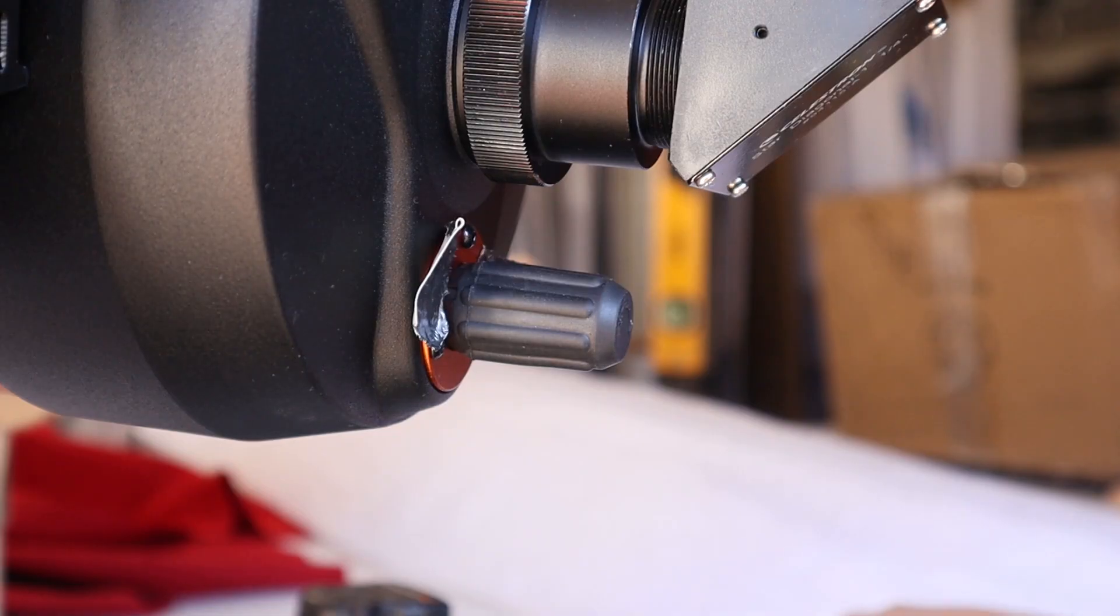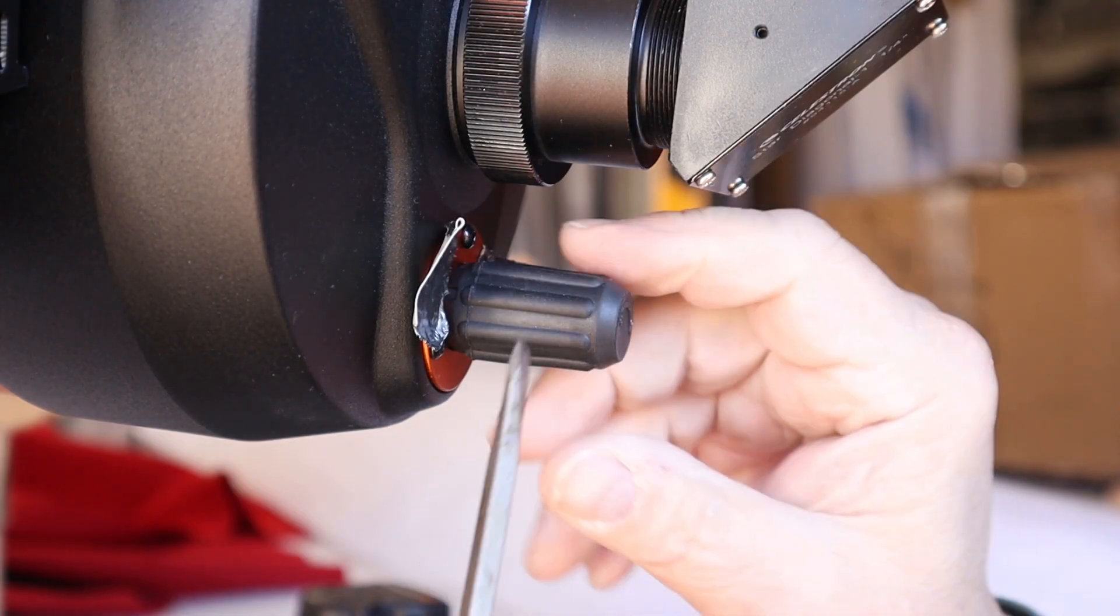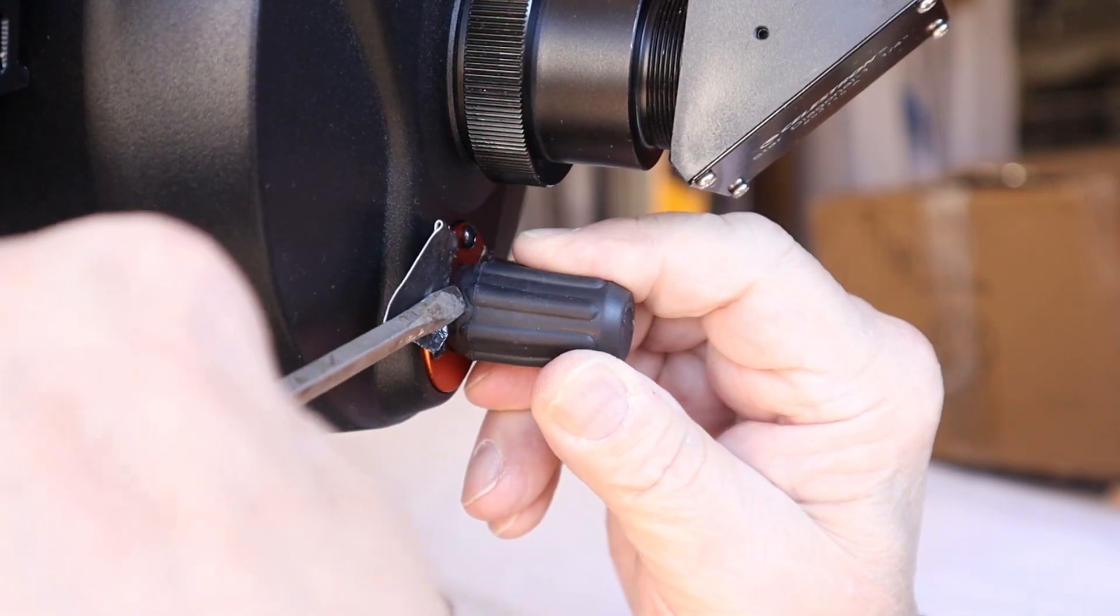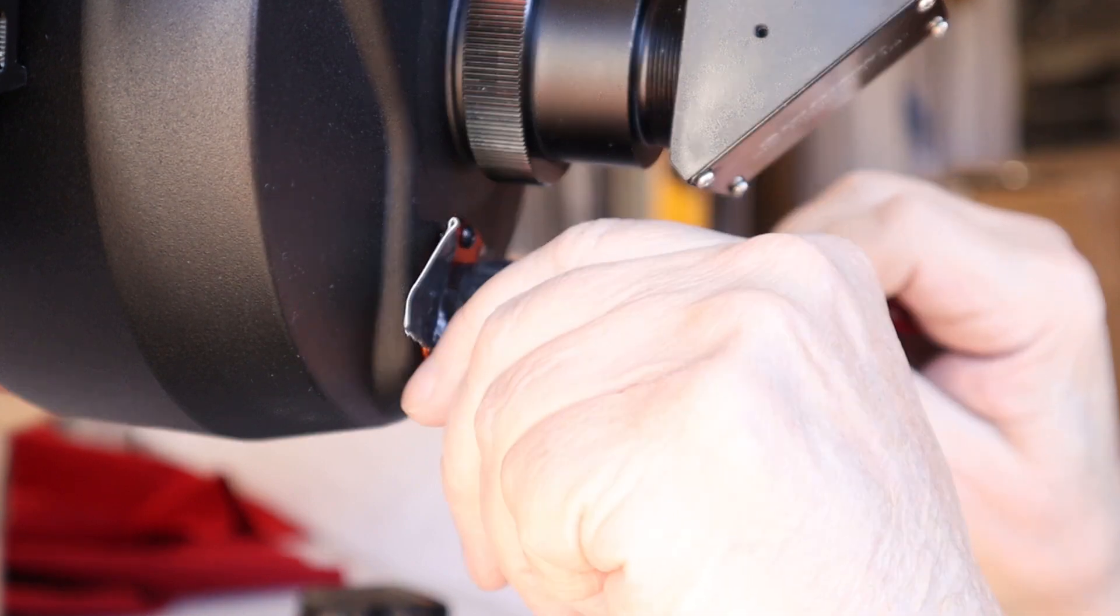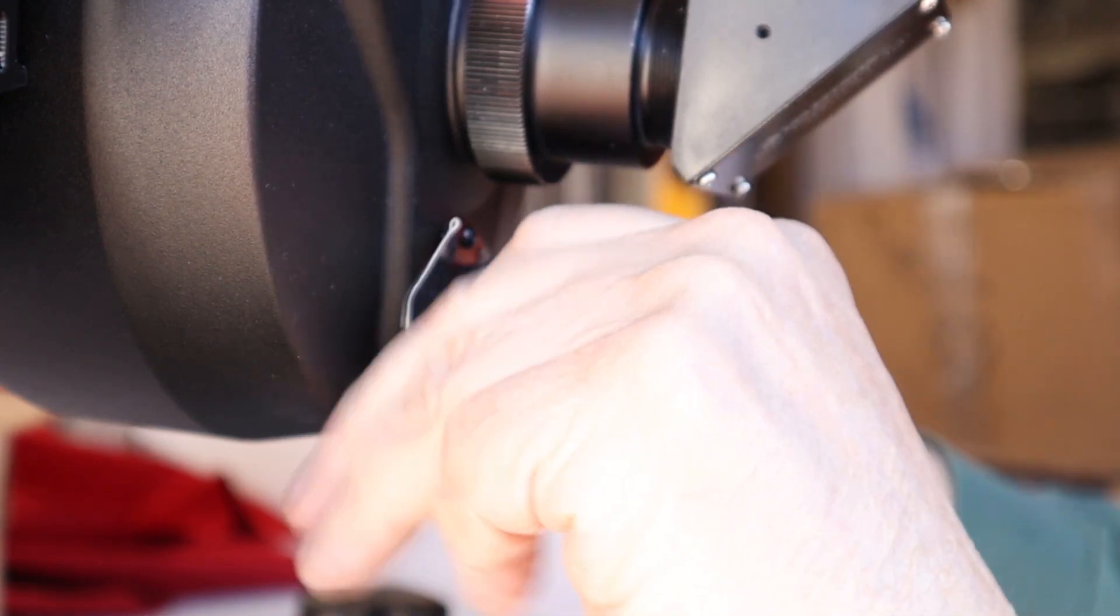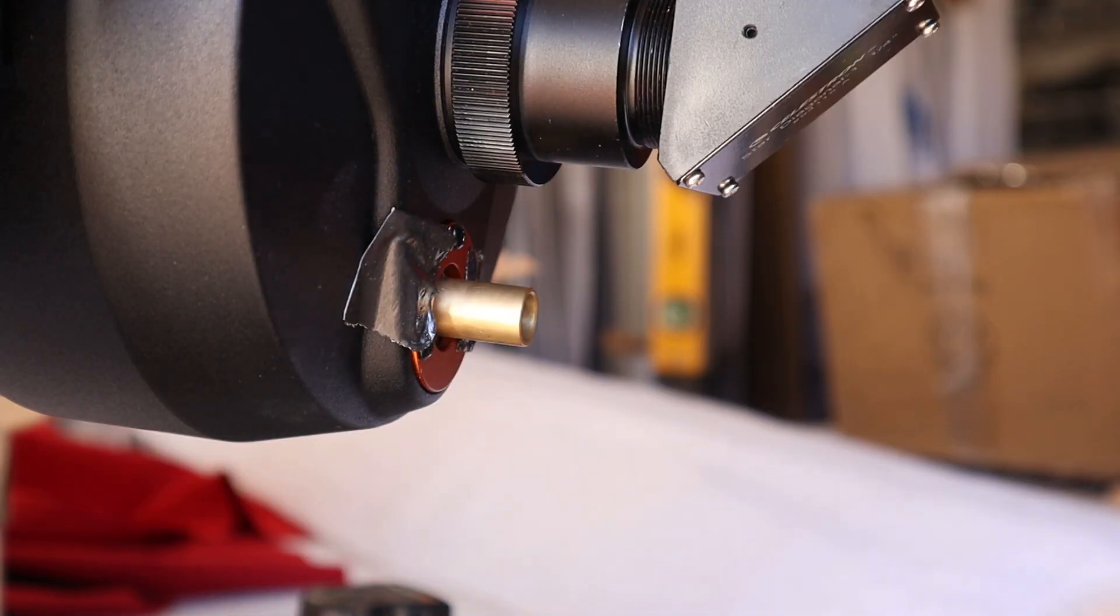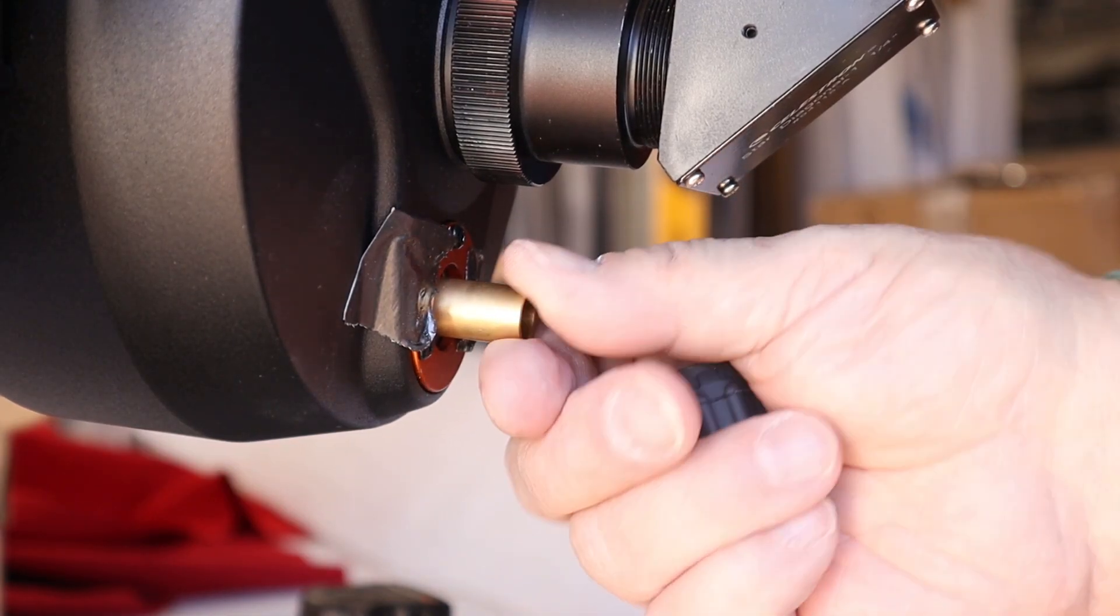Before we can start installing the focus motor, we have to get rid of this little cover on the focusing shaft. The instructions for this unit encourage us to use a screwdriver to help ease that cover off. Pushing something like this off of a shaft always works better than trying to pull it off. And this is the bare shaft that we're looking for, for putting the focus motor on.